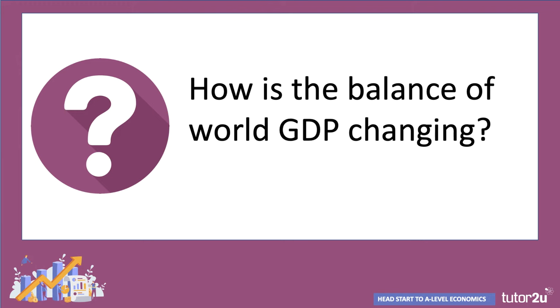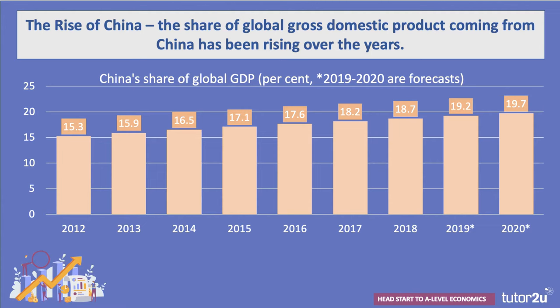So we've looked at per capita incomes, high and low. A really interesting question is how is the balance of world GDP changing? Is there a significant shift in the centre of gravity in the world economy? One important aspect to be aware of as you start your study of economics is the rise of China. This chart shows the share of global GDP coming from China, and there's been a steady increase over the period. China's share of GDP has risen from just over 15% in 2012, touching 20% in 2019 and 2020.